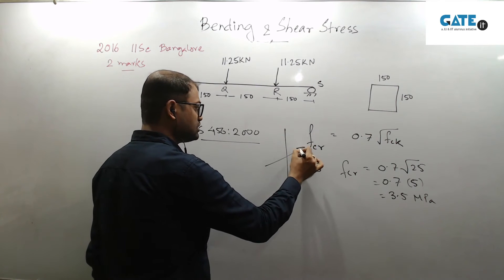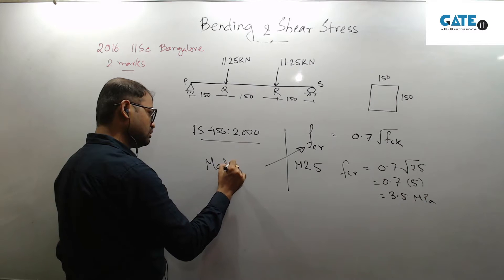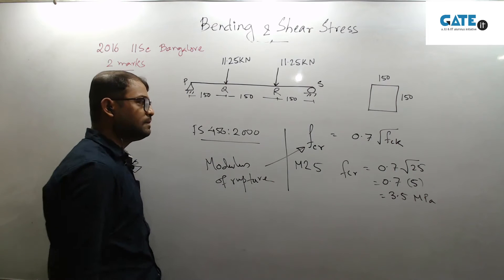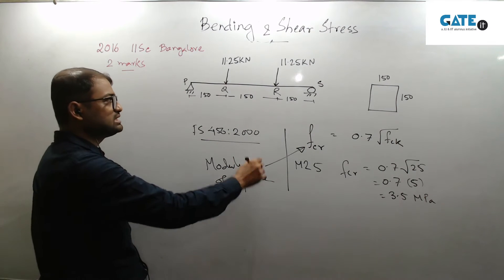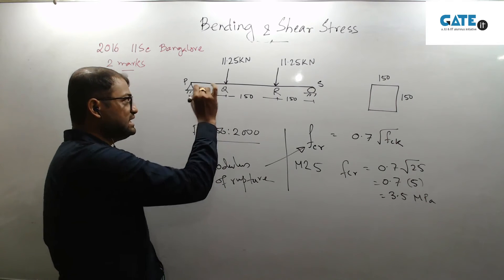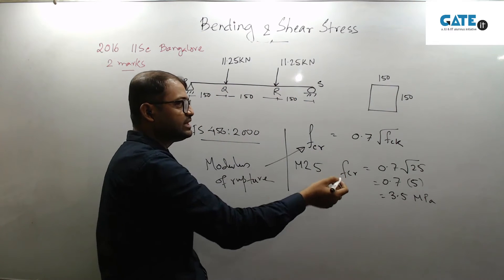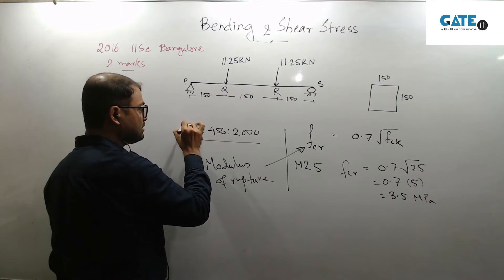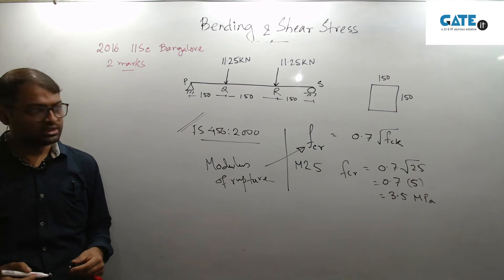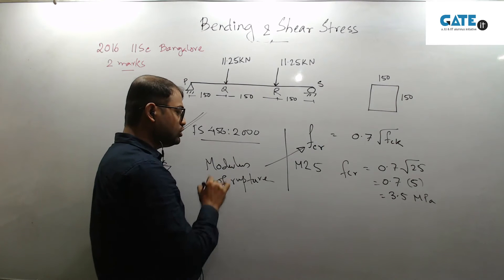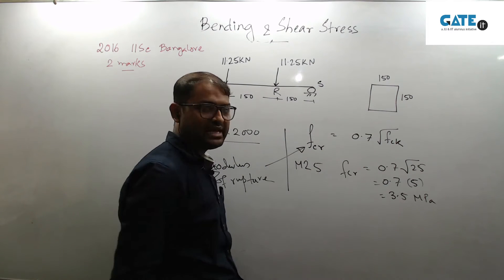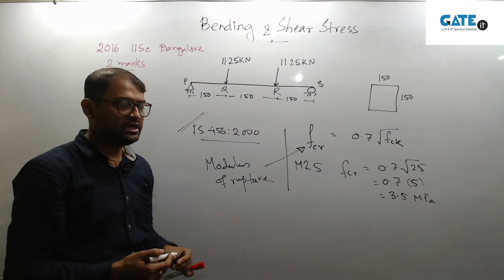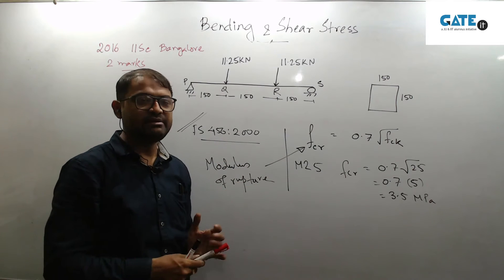General idea: modulus of rupture is related to the material — it is related to concrete, not to steel. So when you are asked what is your modulus of rupture, if you are given the grade of concrete, you approach this formula. This problem setup is not strictly necessary for that.